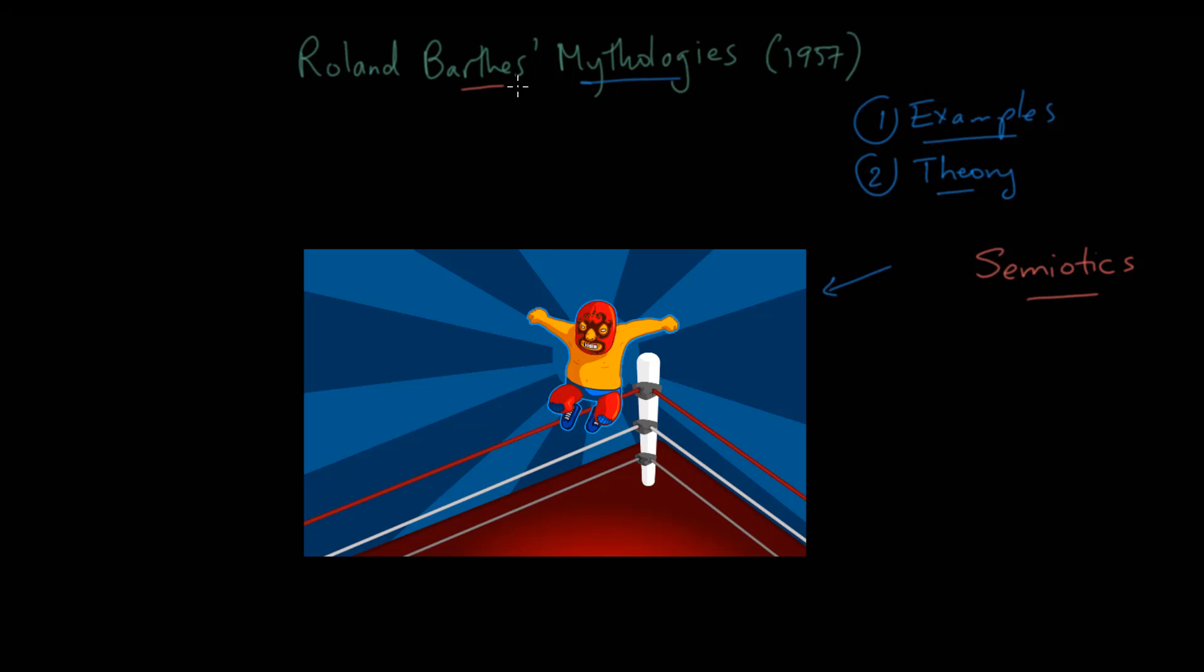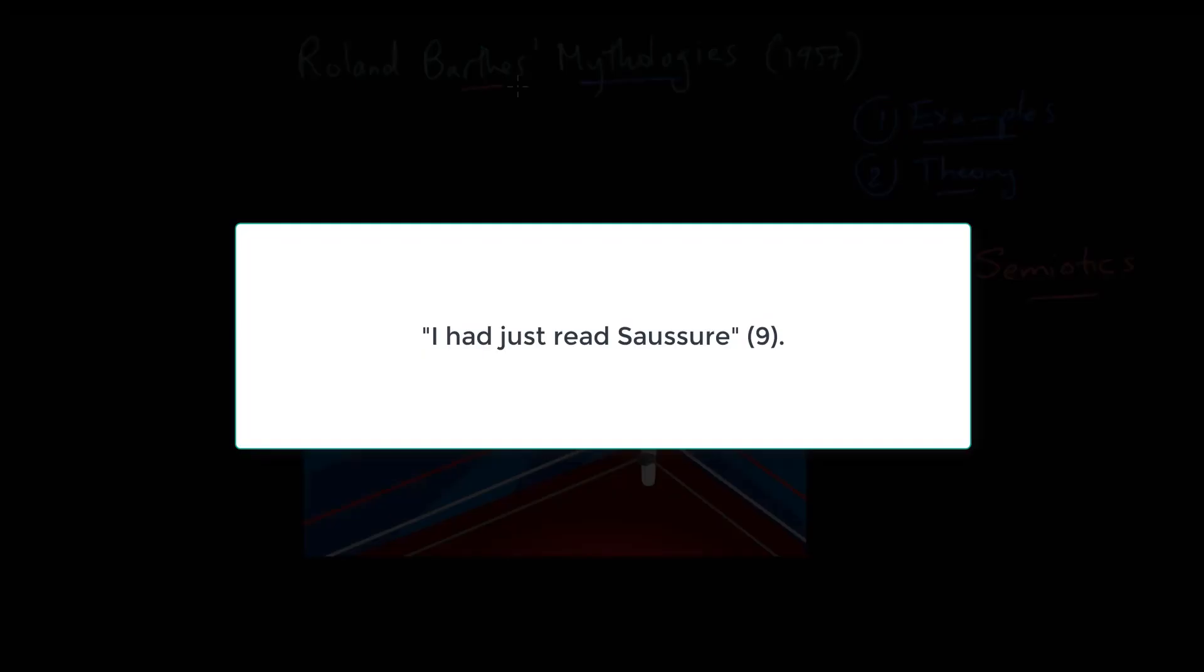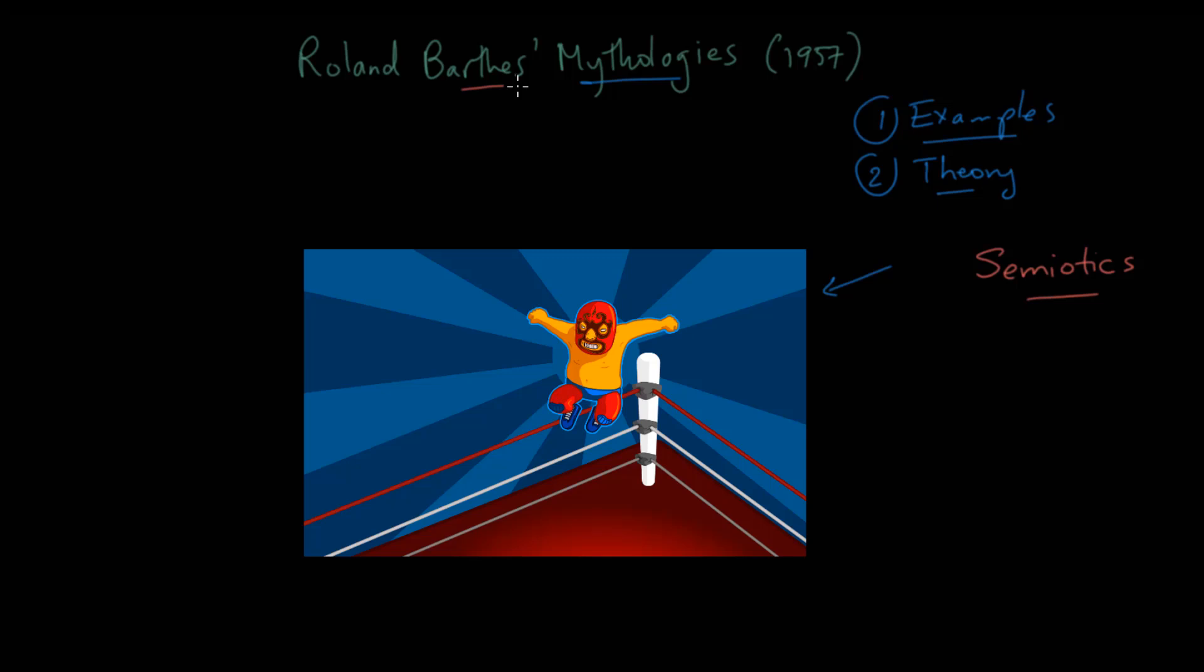So in the introduction to the 1970 edition he says, I had just read Saussure, he says this in the preface, and he's very conscious of the fact that he's so influenced by this particular thinker. Now in terms of his big picture right at the start here, even before we get to the theoretical part, we can see that what he's trying to do is he's trying to see how myth functions in relation to what he calls history and nature.